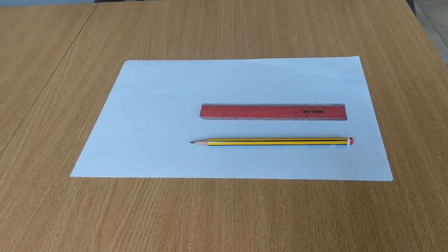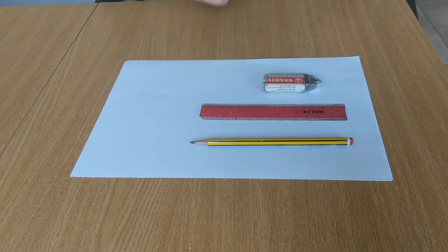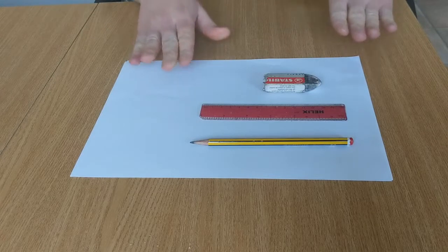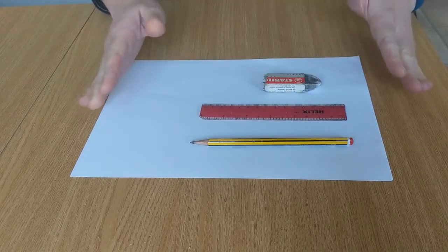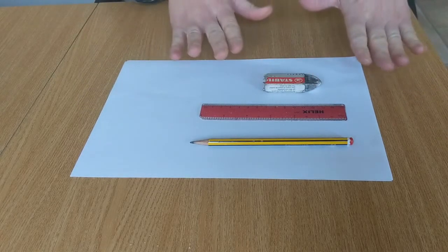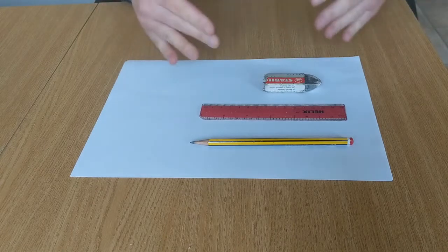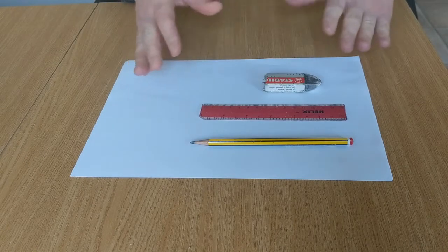So what you're going to need today is a pencil, a ruler, an eraser for if you make any mistakes, and of course a piece of paper. You could use plain paper like I've got, or if you've got squared paper or graph paper that might help you a little bit more, whatever you have available.